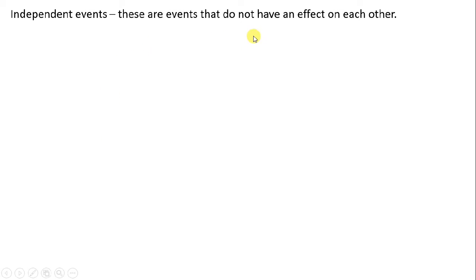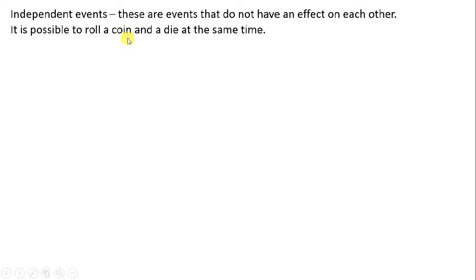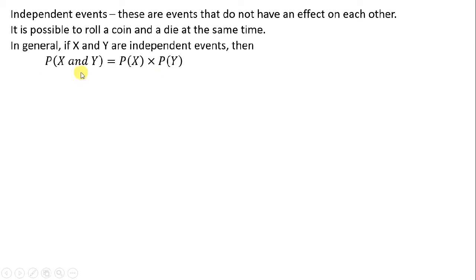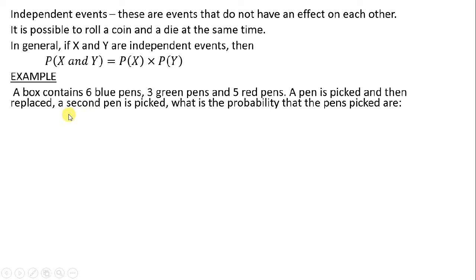Independent events: these are events that do not have an effect on each other. It is possible to roll a coin and a die at the same time. In general, if X and Y are independent events, then the probability of X and Y equals the probability of X times the probability of Y. Every time you see 'and', it means that you are supposed to multiply.